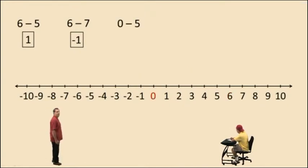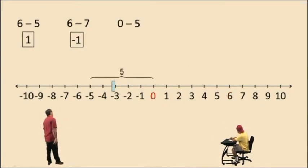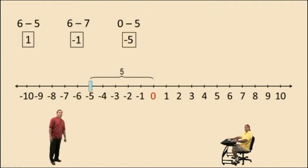0 subtract 5. It's so easy it's confusing. You start at 0, and you move 5 units to the left, and what do you get, Charlie? Negative 5. Very nice there, Charlie. Negative 5 is our answer.